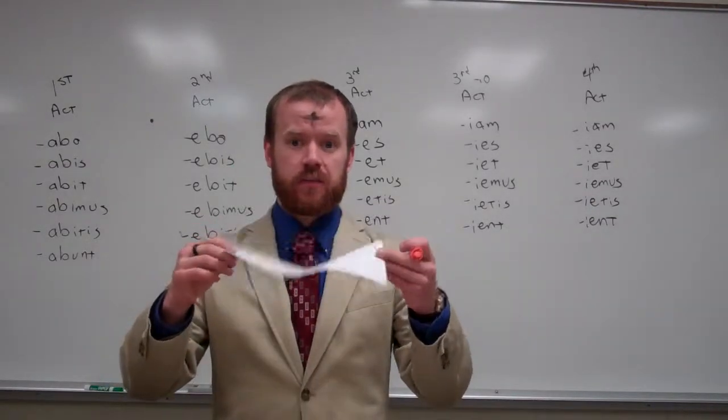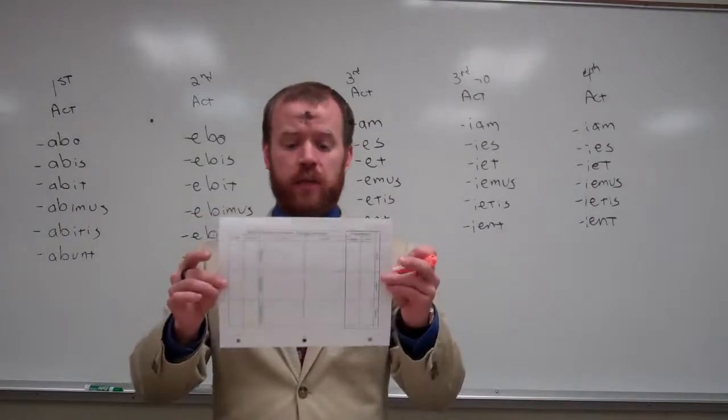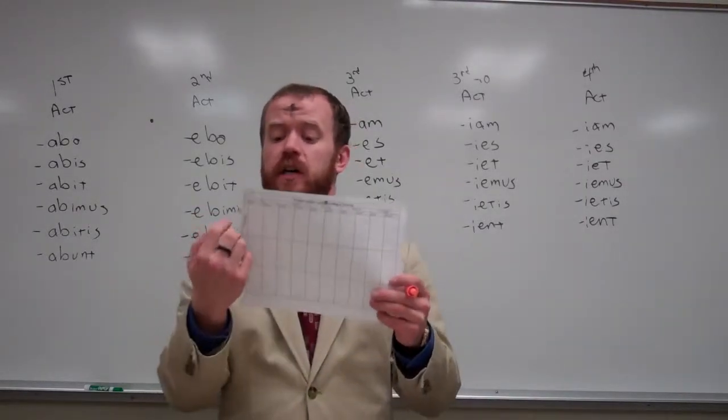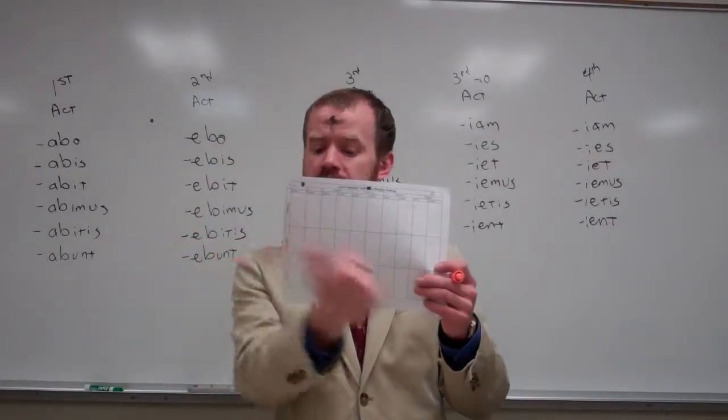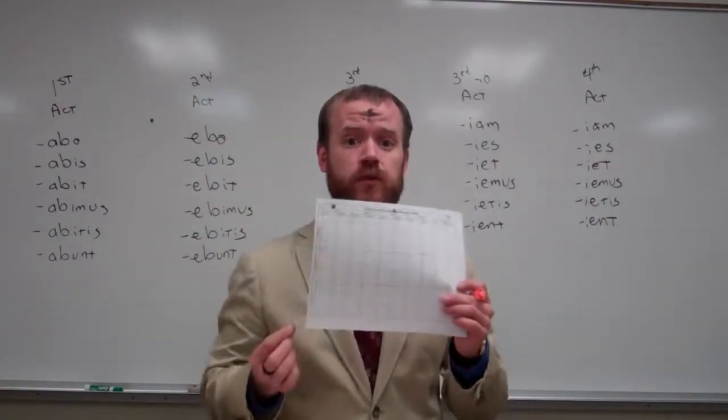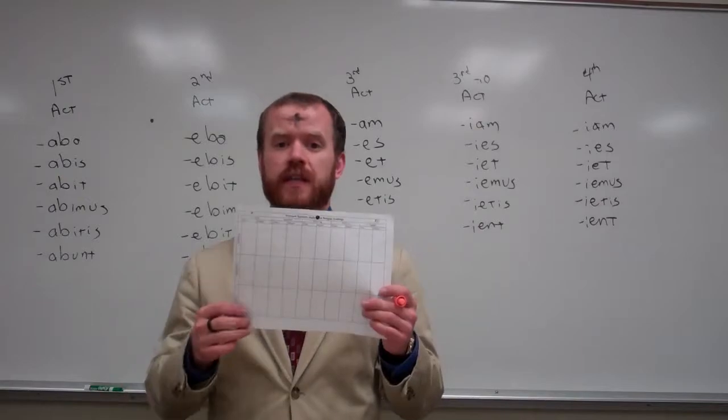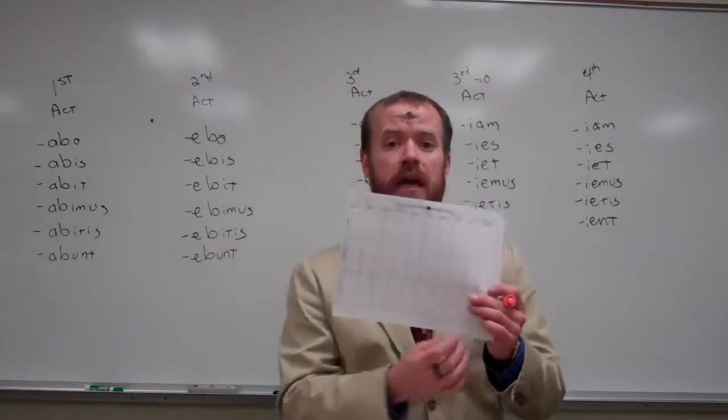This is going to go along and fill out on your indicative ending chart. It looks like this. It has the present system on one side, the perfect system on another. And we've already filled out on the present system, we've already filled out the present and the imperfect, and so now we're going to fill out the future. We're only going to focus on the active today, so you will have every other column empty.